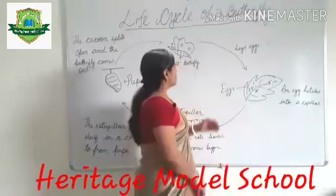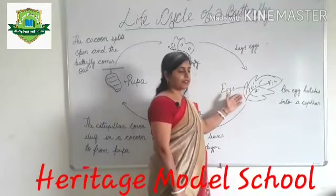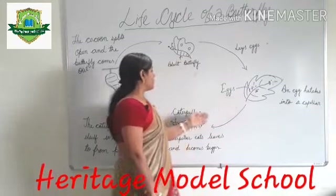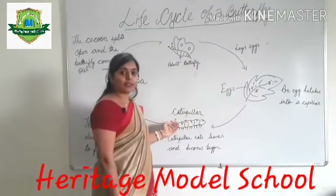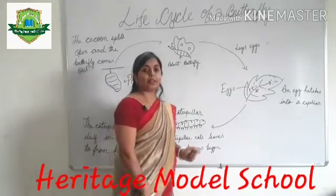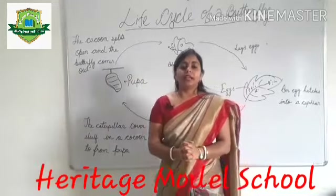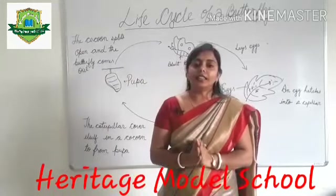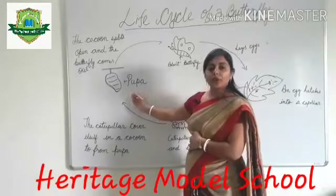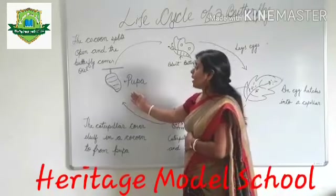First, a butterfly lays egg on this leaf. And after hatching, the egg becomes a caterpillar. So caterpillar eats leaves and becomes bigger, then becomes inactive and covers itself — the shell becomes harder. The shell is called cocoon, and this stage is called pupa.